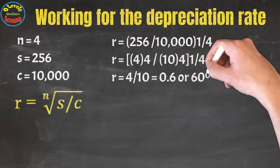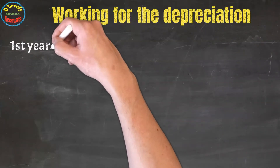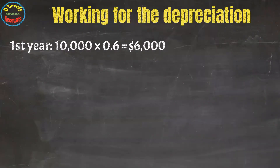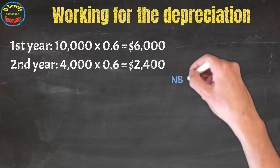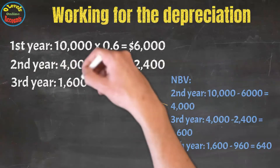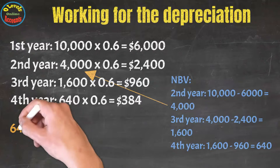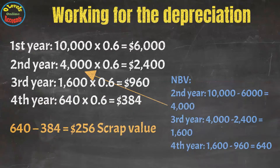By putting all values in the rate formula, we get a rate of 60%. For the first year: 10,000 multiplied by 60% gives $6,000 as depreciation. For the second year, we apply the rate on net book value: 10,000 minus 6,000 equals 4,000. Applying the rate gives $1,600 as depreciation. The same practice applies for the third and fourth years. After the useful life, we get the scrap value: fourth year net book value minus depreciation = 640 minus 384 = $256. This matches the scrap value given in the question.